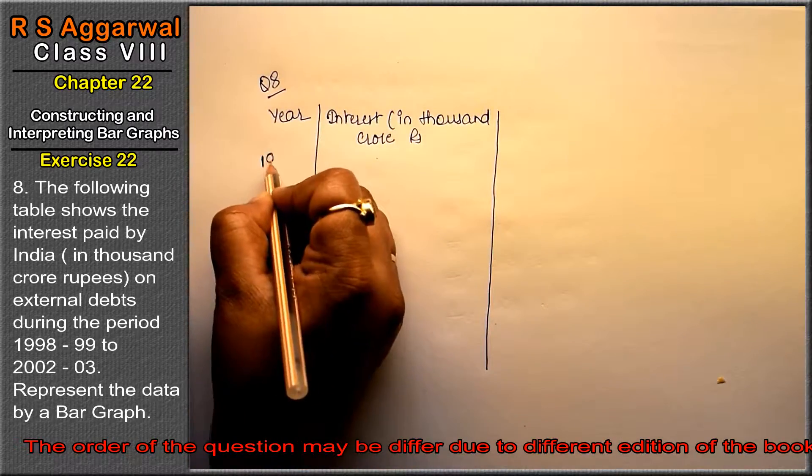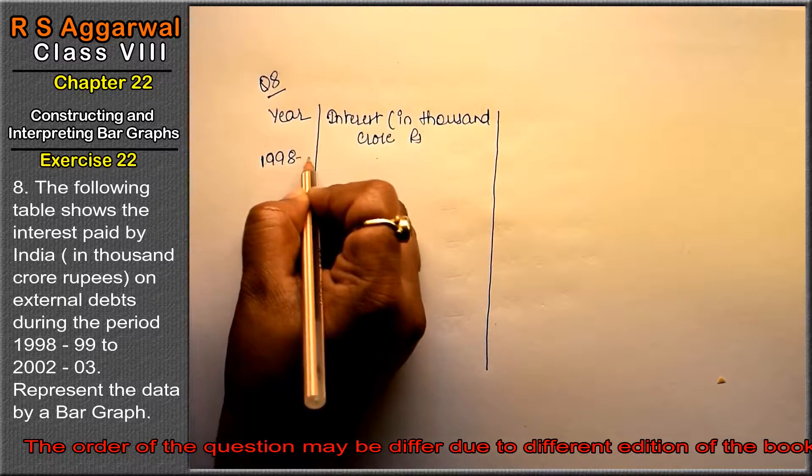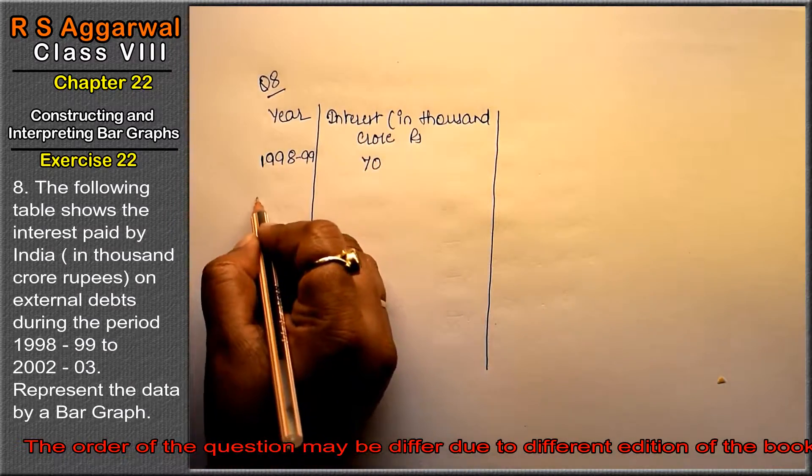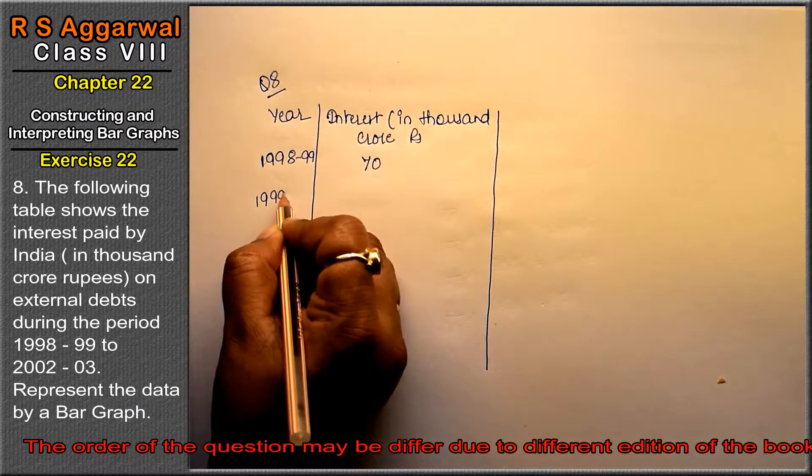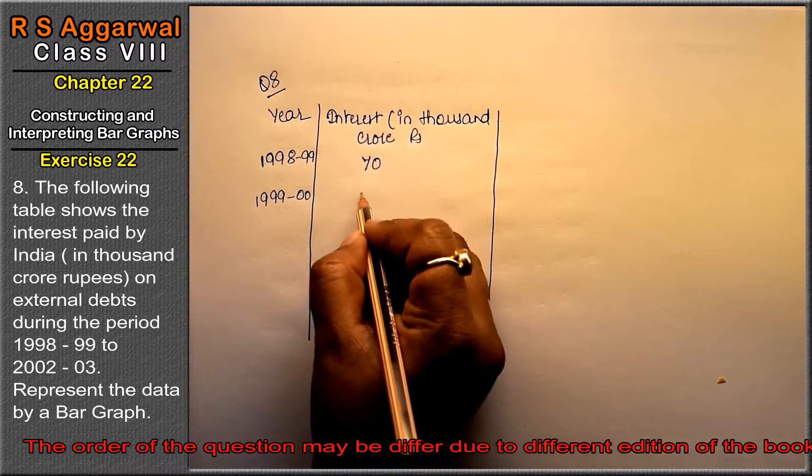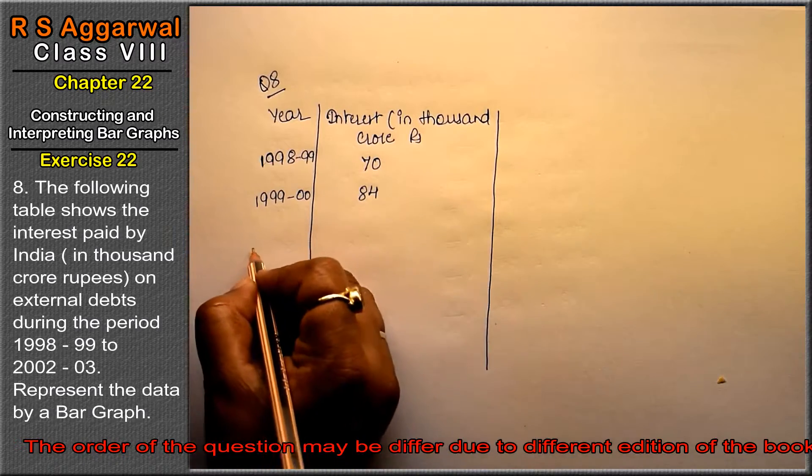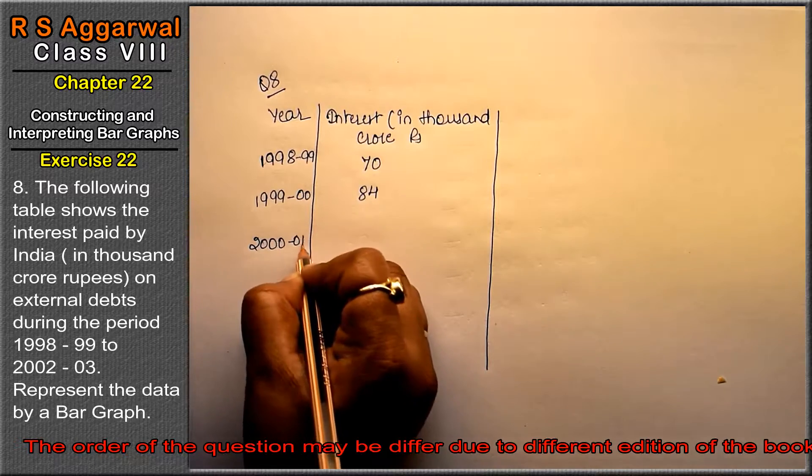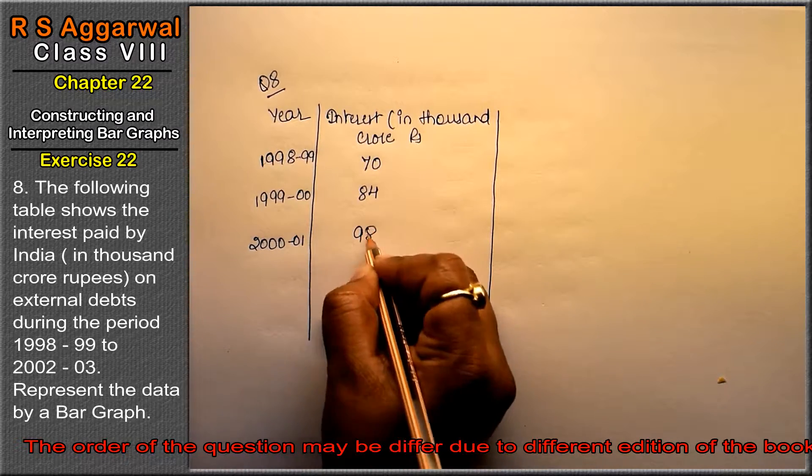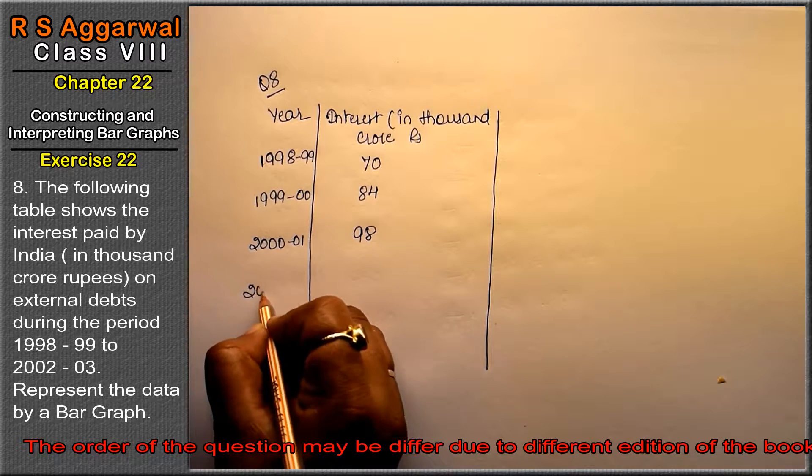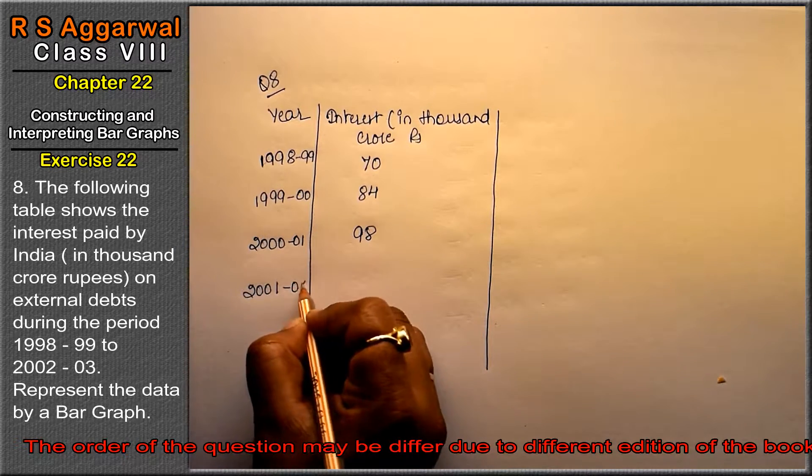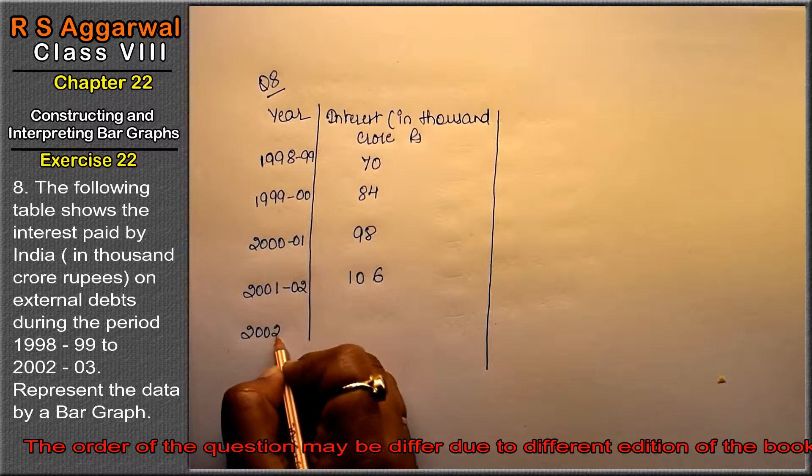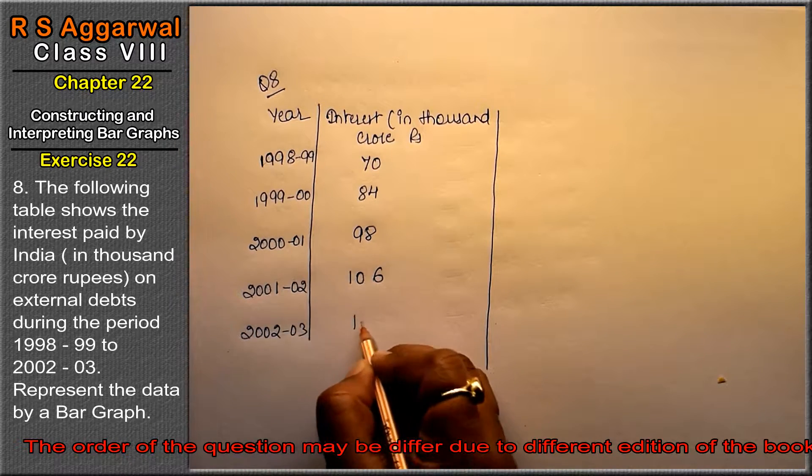First is 1998 to 1999, which is 70. 1999 to 2000 is 84. 2000 to 2001 we have 98. 2001 to 2002 there is 106. And 2002 to 2003 there is 120.